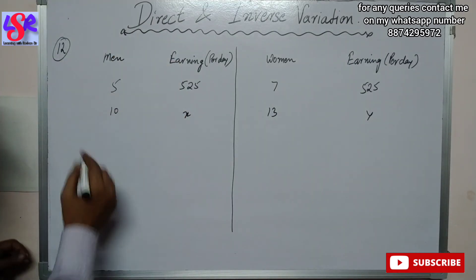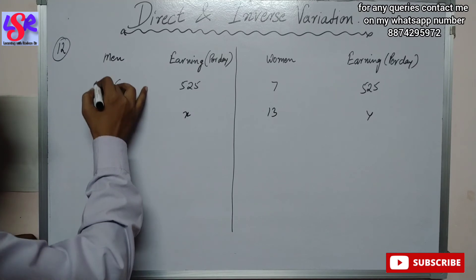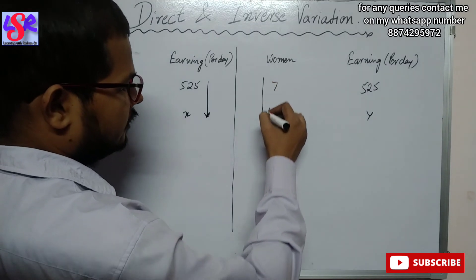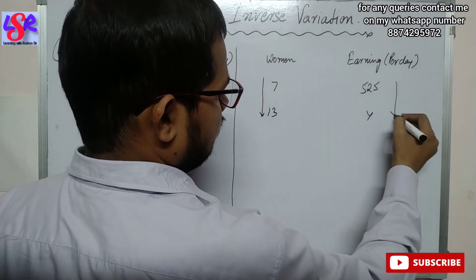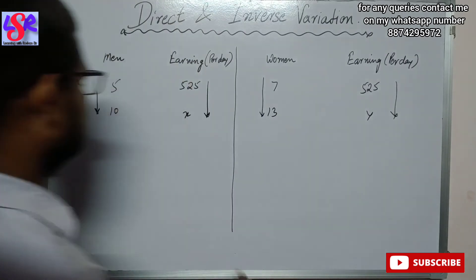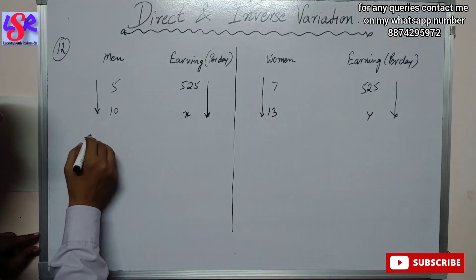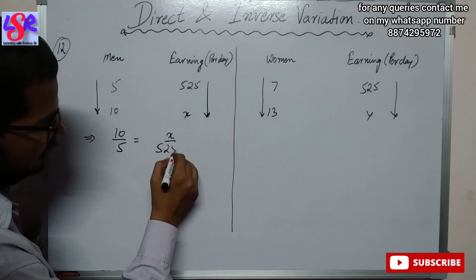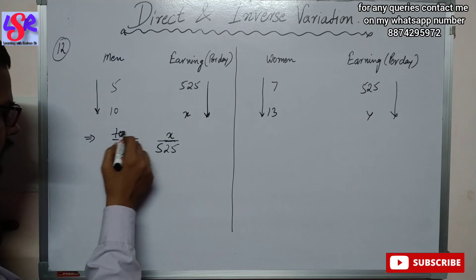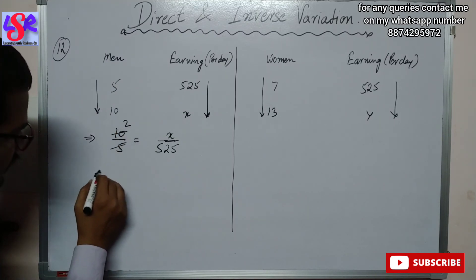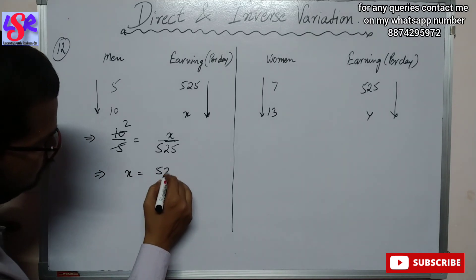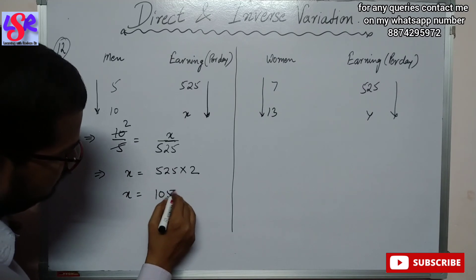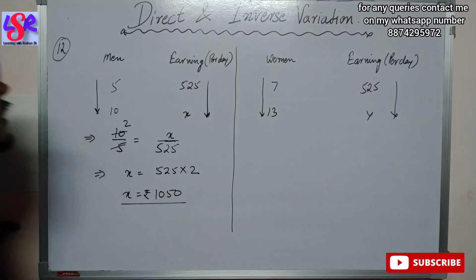This is a case of direct variation because as the number of men increases their earning increases. We put the arrow in this direction as 10 is greater than 5. We write: 10 upon 5 equals to x upon 525. Simplifying, we get 2, then cross multiplying: x equals to 525 into 2, that is x equals to 1050 rupees as the earning of 10 men.